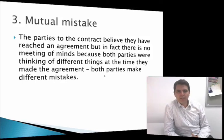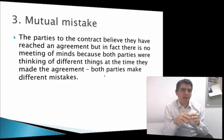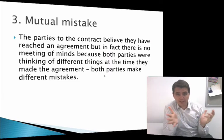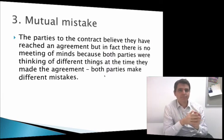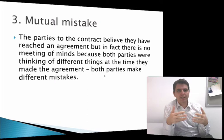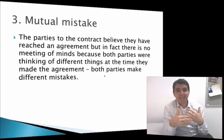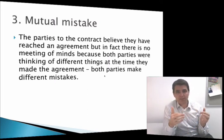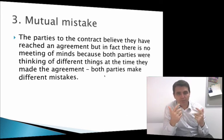Whereas common mistake is a mistake by both parties about something in the contract, like who did the painting, mutual mistake occurs where the parties believe they have an agreement, but they actually don't have an agreement. There's been no meeting of minds and they're both mistaken about that.